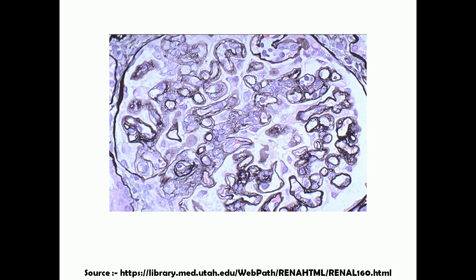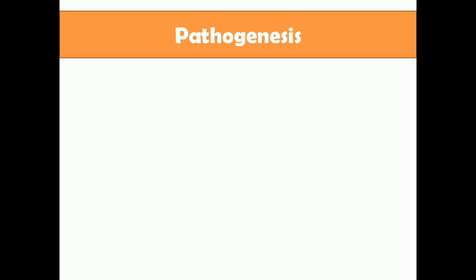Here is the silver stain of a highly magnified glomerulus showing MPGN. You can see many black structures representing the glomerular membrane. There is increased proliferation of the mesangium throughout the slide, and you can see two layers of black circles surrounding the glomerular capillaries, which I'll explain shortly.